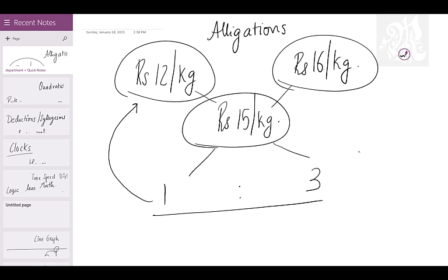You get the ratio straight: 1 is to 3. Want to reconfirm? 1 times 12 is 12, 3 times 16 is 48. 12 plus 48 is 60. 60 divided by 4 is 15. Just got reconfirmed.